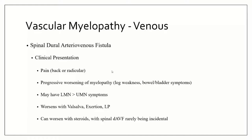Always look for a sensory level, always look for bowel and bladder symptoms, and if you have a suspicion, image the cord first — the person with GBS can wait a couple of hours until you do an MRI. If you think this is transverse myelitis and you give steroids, they increase fluid retention and intravascular volume, which can worsen venous engorgement. Rarely, you may find a dural AV fistula incidentally on MRI with no problems — it has been reported — but typically if you see it, it's causing issues.